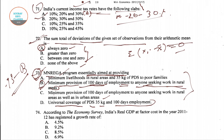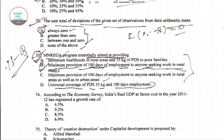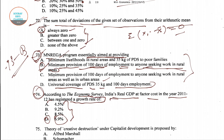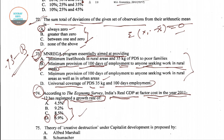Question number 74 asks: according to the Economic Survey, India's real GDP at factor cost in 2011-12 registered a growth rate of — four options are given. The answer is 6.9%, so option D is the right answer. According to the Economic Survey, India's real GDP at factor cost in 2011-12 was 6.9%.